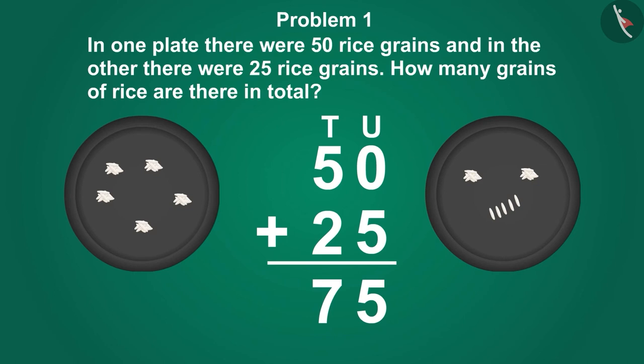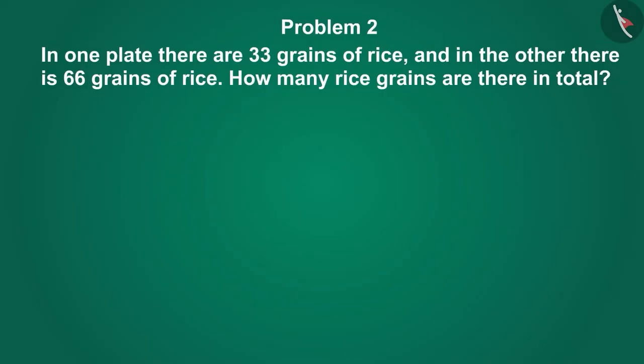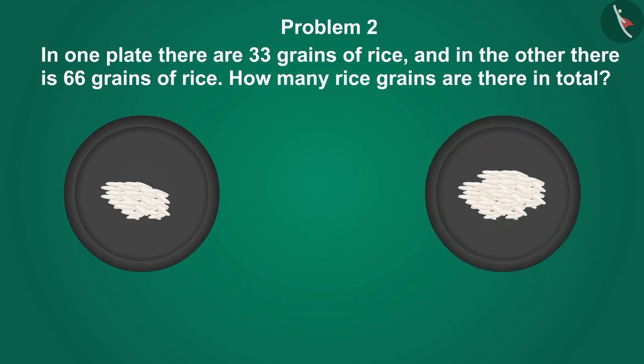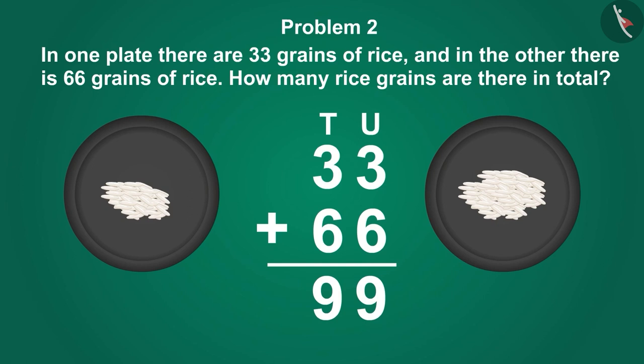The next question is: in one plate there are 33 grains of rice, and in the other there are 66 grains of rice. How many rice grains are there in total? Gaffey started thinking about the answer. She wrote the sum like this and found the correct answer: 99. Wow, this is the correct answer! Gaffey is now ready for her exam.